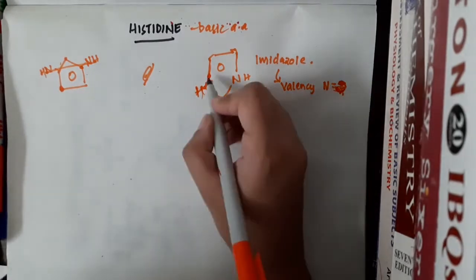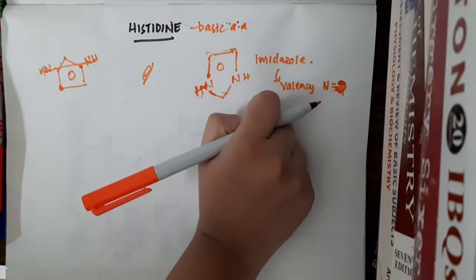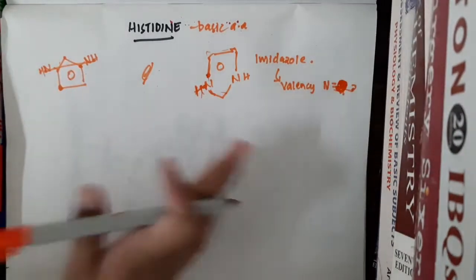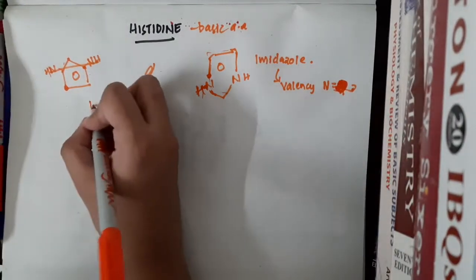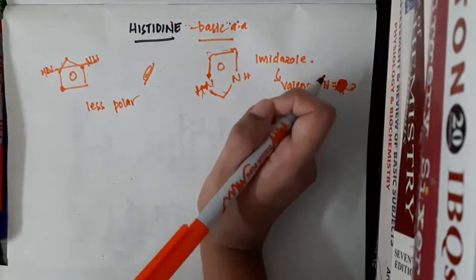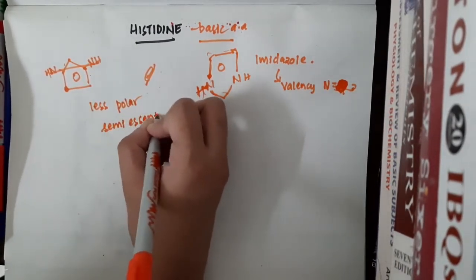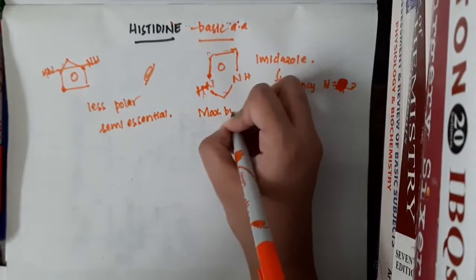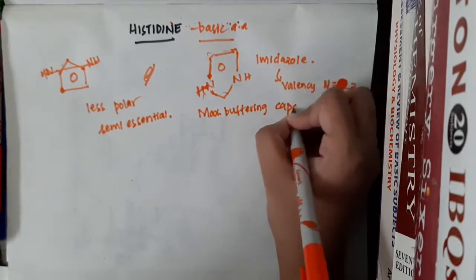So in the imidazole ring the nitrogen has 3 valencies occupied. Now, histidine is a less polar amino acid and it is a basic amino acid.